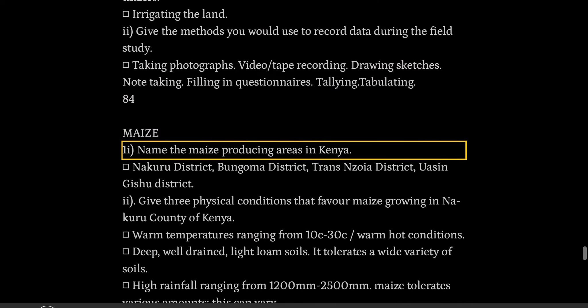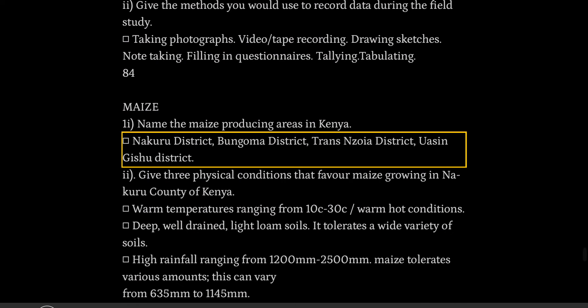Maize. I name the maize-producing areas in Kenya: Nakuru district, Bungoma district, Trans-Nzoia district, Uasin Gishu district.